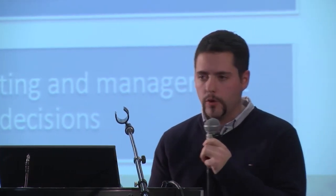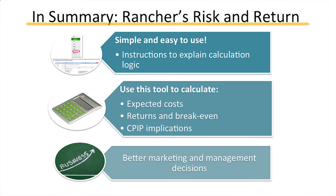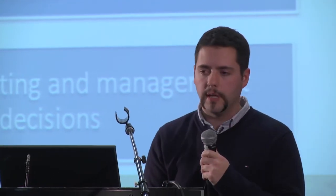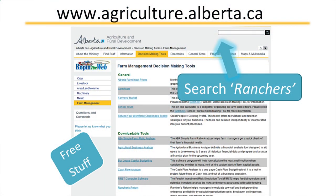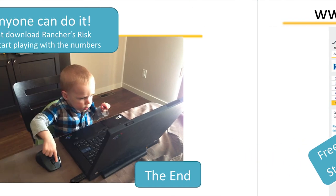In summary, the tool is there and it is easy to use once you get playing around with it. You can use this to calculate your expected costs, your break-evens, and then really look at the CPIP implications for your operations and make a better management decision for how you want to plan going forward with some sort of product to help you if you choose you need it. The tool is found at www.agriculture.alberta.ca — it's downloadable in our decision-making tools, a free tool along with many others.